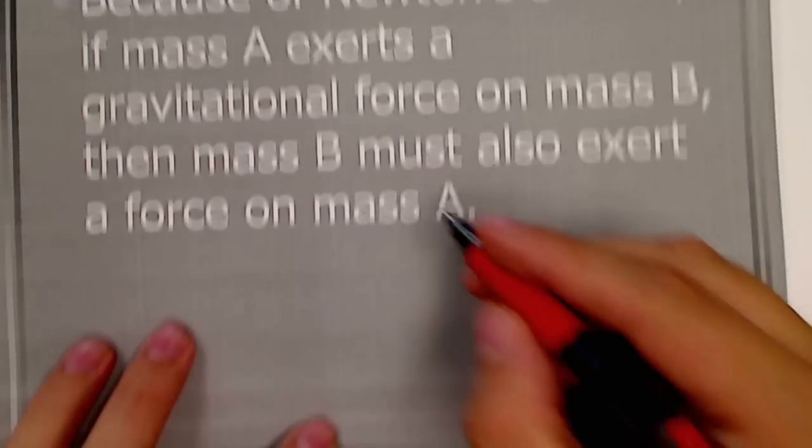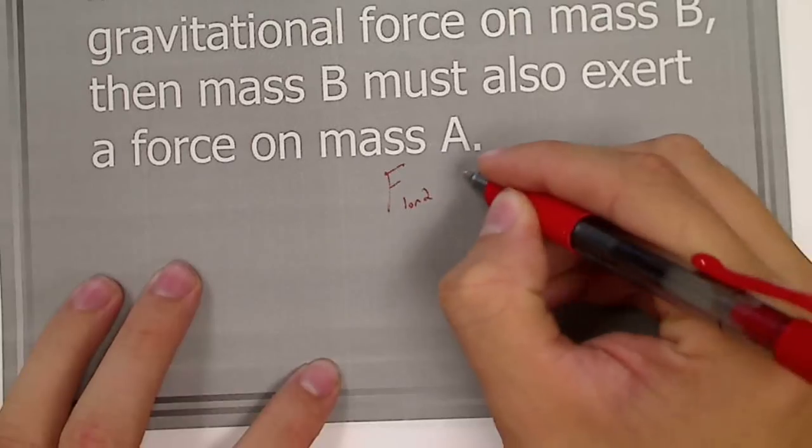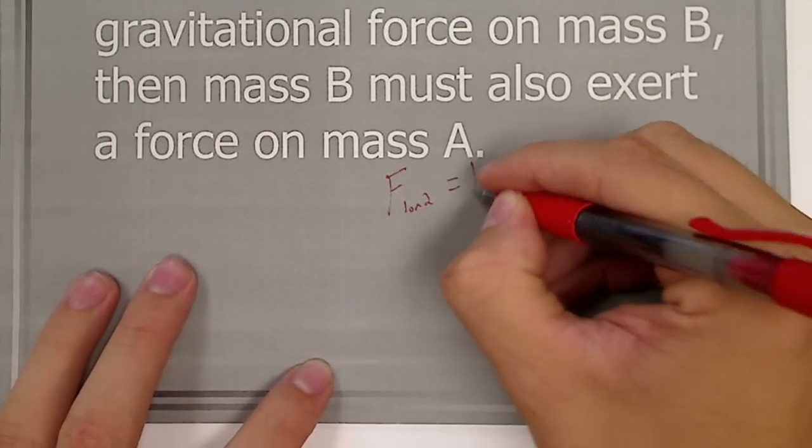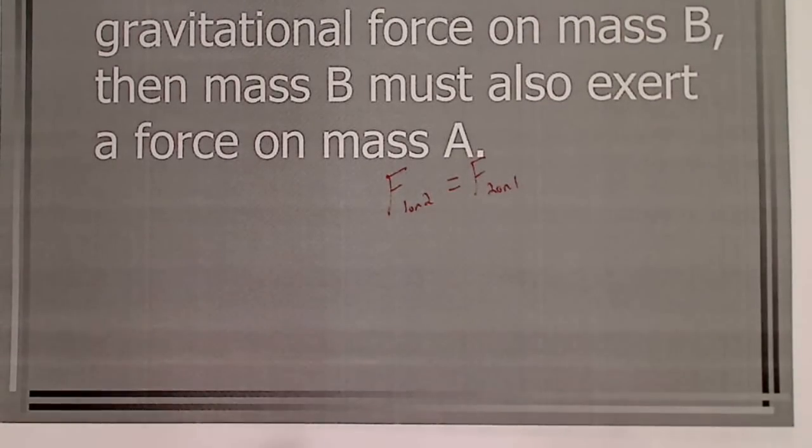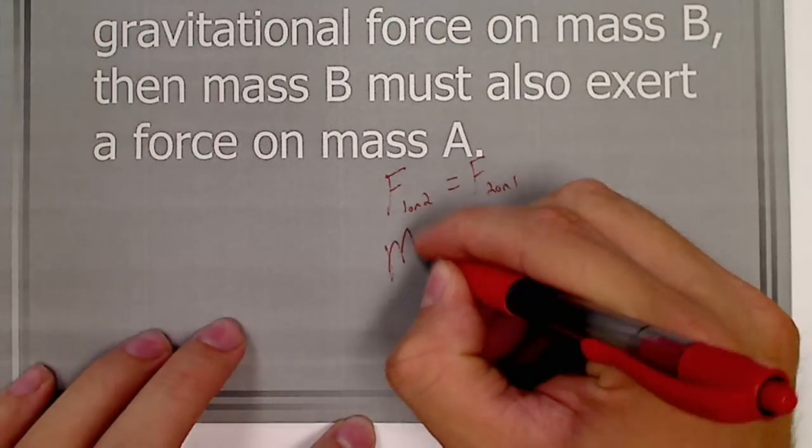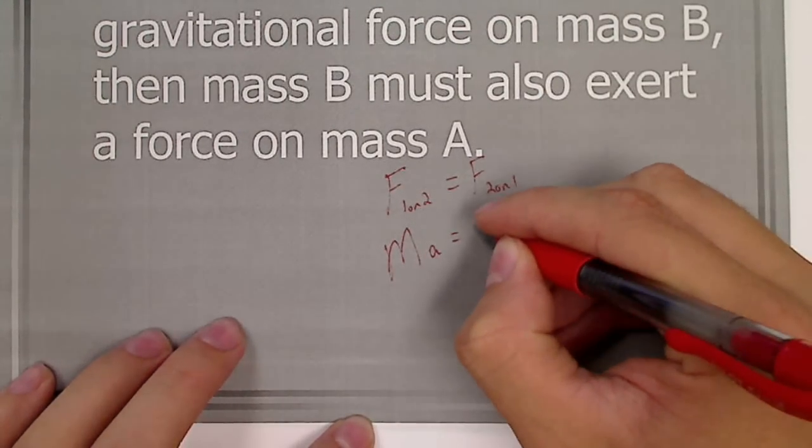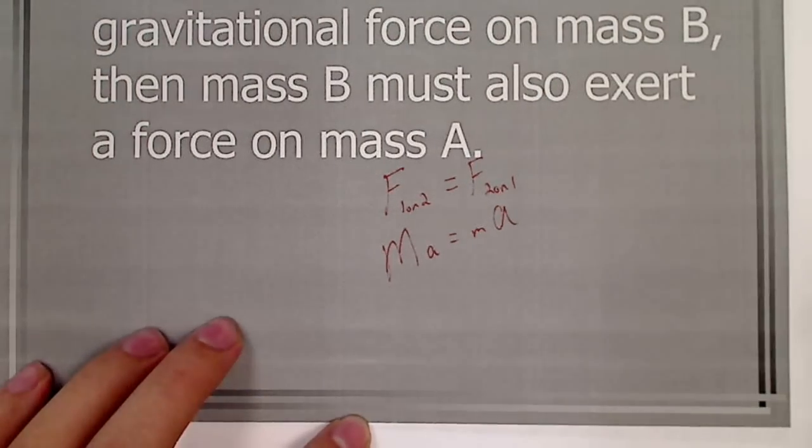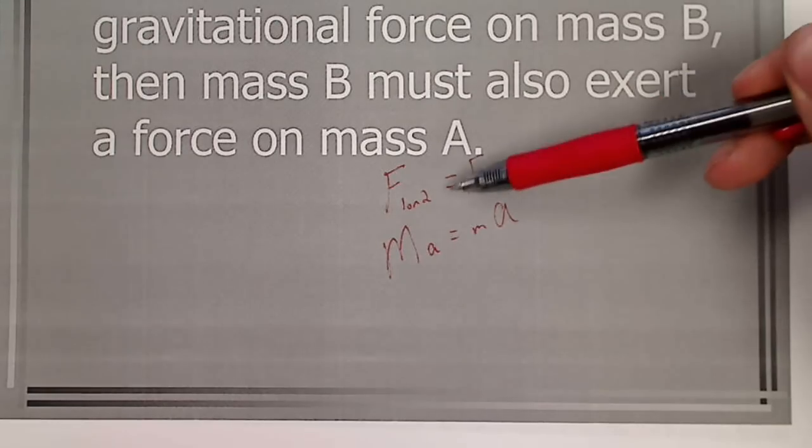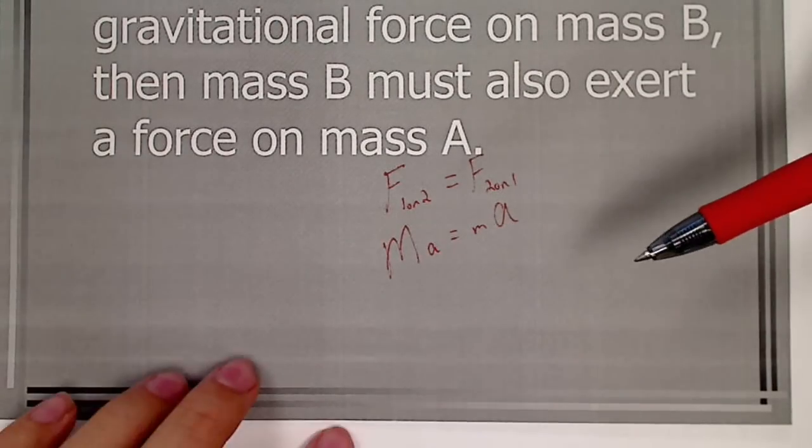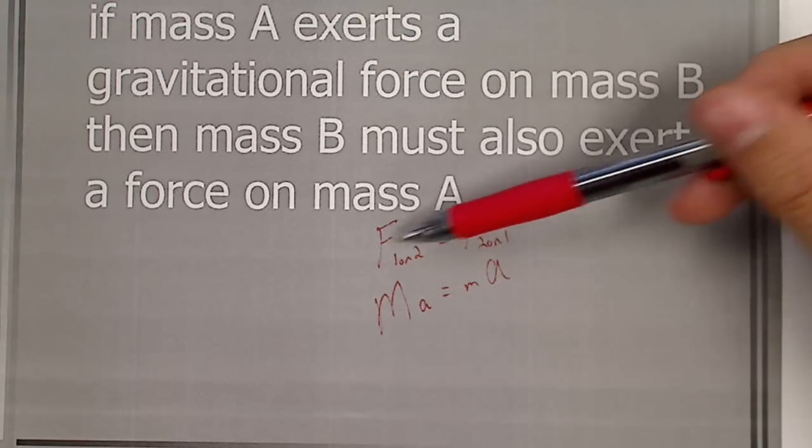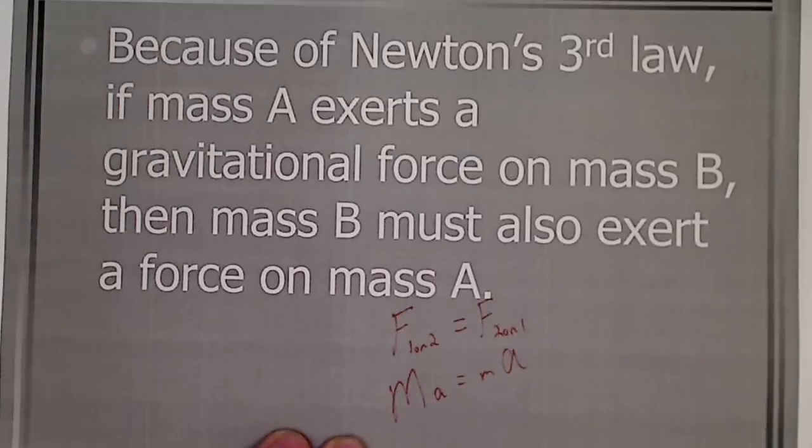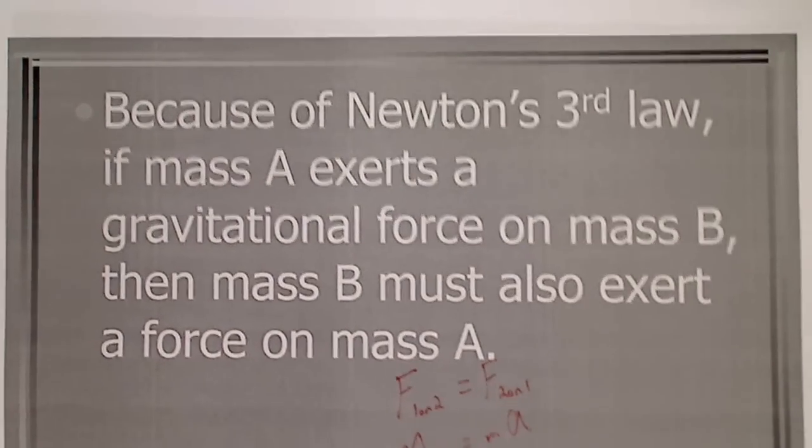Now, remember, it is the force of 1 on 2 is equal to the force of 2 on 1. It's the forces that are equal. The mass and the accelerations may not be equal. So, that's why the Earth can accelerate us when we stand on it, but we do not accelerate it. Although, the force of the Earth on us is equal to the force of us on the Earth. Our mass does pull on the Earth as well.